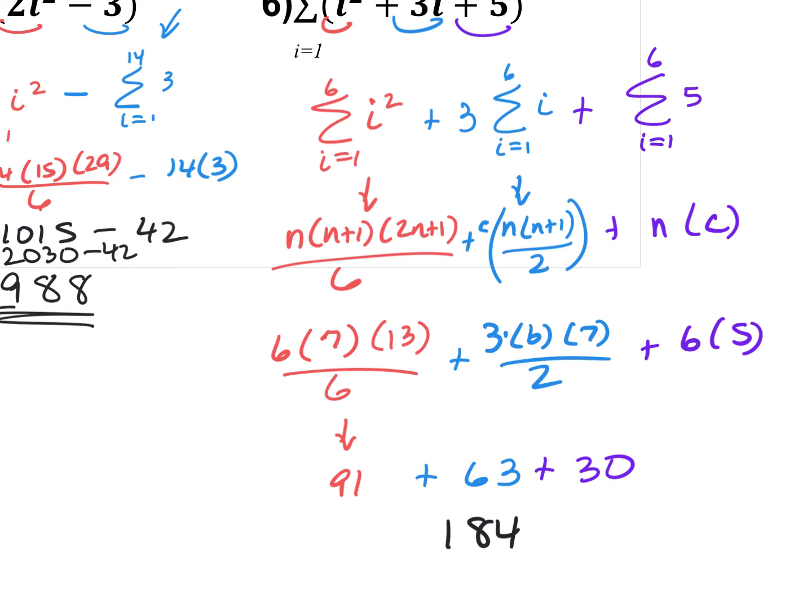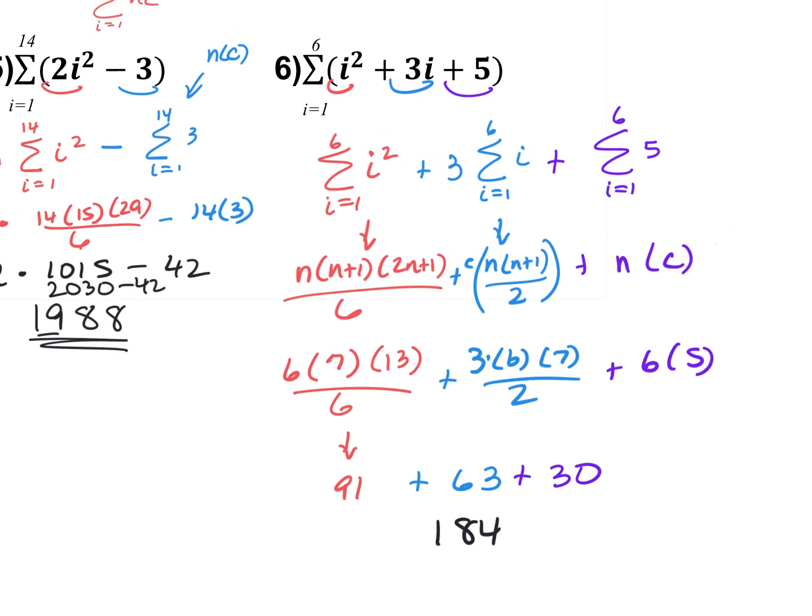These are the rules and properties. Day 1 homework for section 11-1 is just plugging in and finding the first five terms, and perhaps a 50th term — just take the n value and plug it into the given rule. Day 2 will use these summation rules and properties.